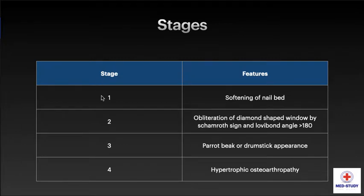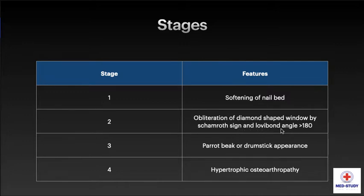Now coming to the stages. Stage 1 is when there is softening of the nail plate. Stage 2 is when there is obliteration of the diamond-shaped window by the Schamroth sign, and the Lovibond angle is more than 180 degrees. Stage 3 is when there is parrot beak or drumstick appearance. Stage 4 results in hypertrophic osteoarthropathy.